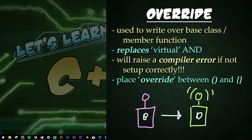Previously, I said adding virtual to a subclass, aka a derived member function, could do this task, but override does the same thing and will create a compiler error if used improperly. This makes override a far better choice. It can only be added to functions that are already virtual in the base class.